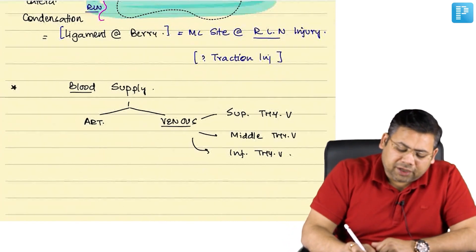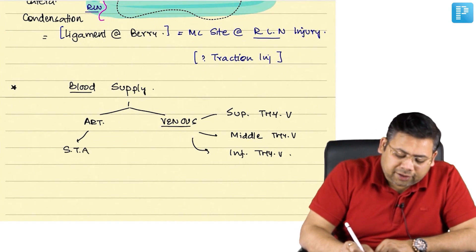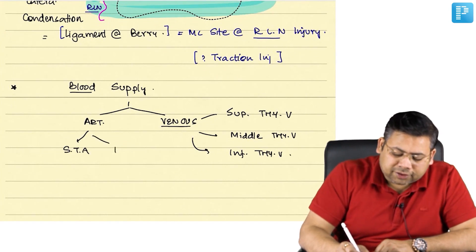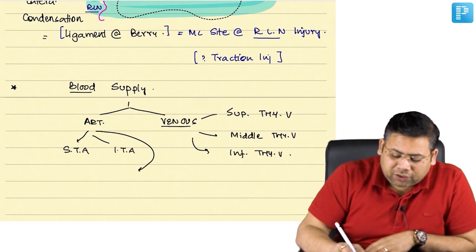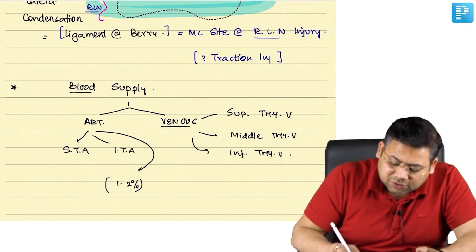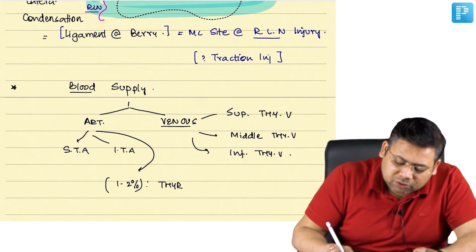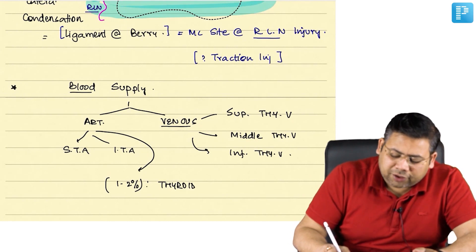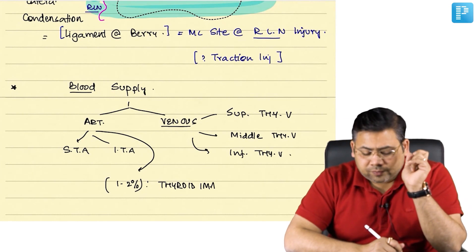If you talk about arterial, we have the superior thyroid artery and the inferior thyroid artery. In some cases — one to two percent of cases — there may be a direct branch from the aorta, and what is that known as? Thyroid ima. So thyroid ima is a direct branch from the aorta.